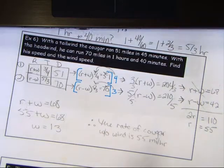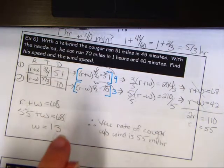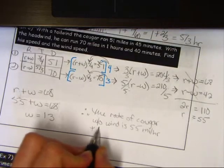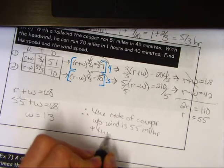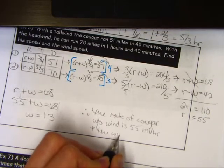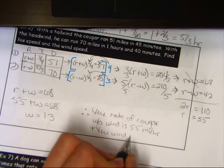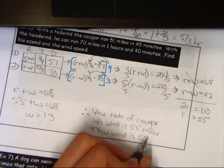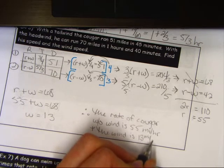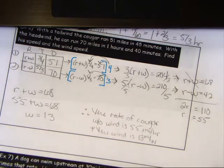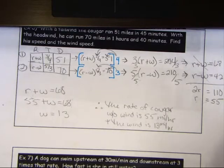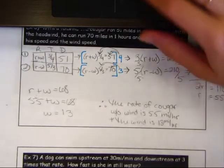Therefore, the rate of the cougar without wind is 55 miles per hour — we fixed the units using three-fourths and five-thirds — and the wind speed is 13 miles per hour.